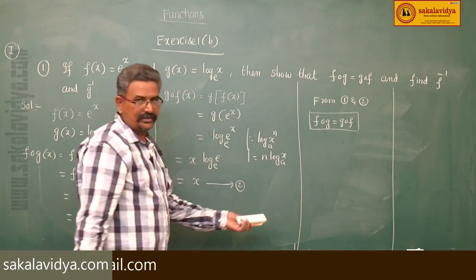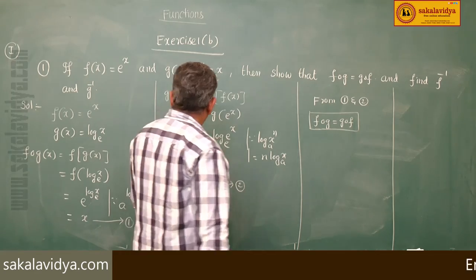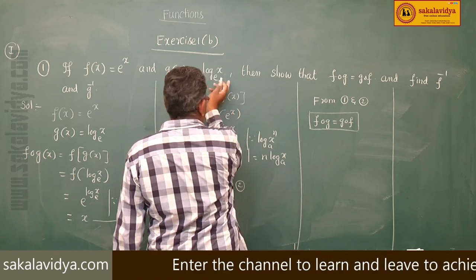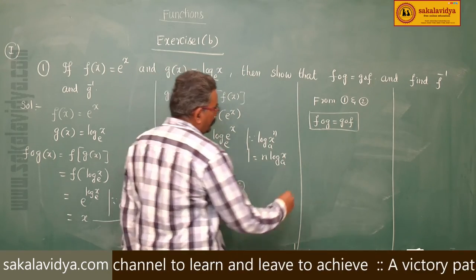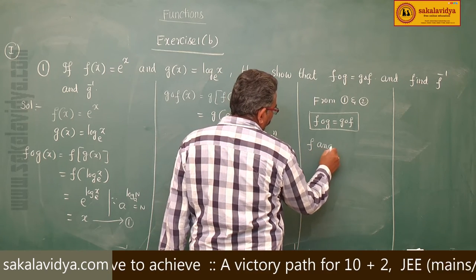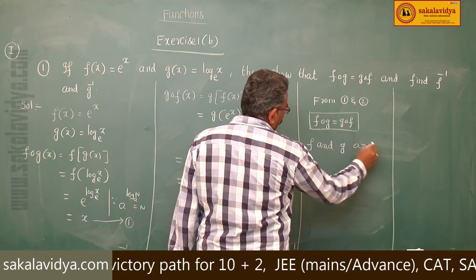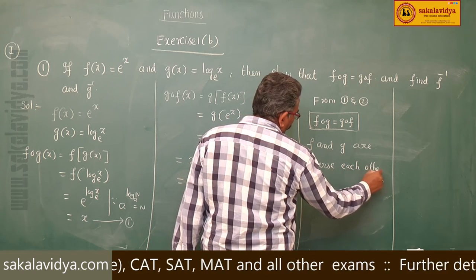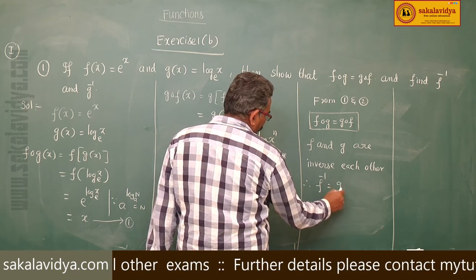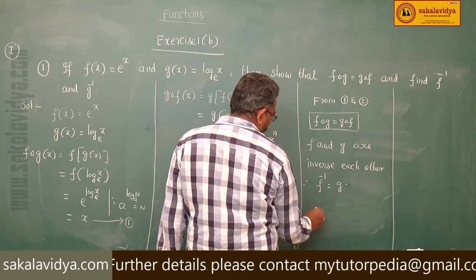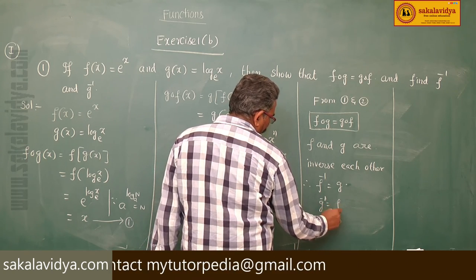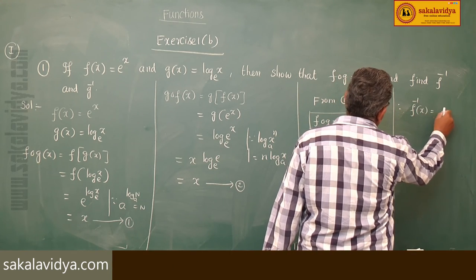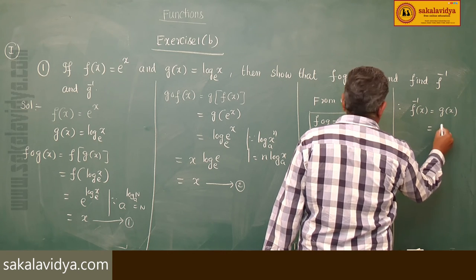Now we have to find f inverse and g inverse. Since f∘g = g∘f and the compositions yield the identity, f and g are inverses of each other. Therefore f⁻¹ = g, that is f⁻¹(x) = log x to base e, and g⁻¹ = f, that is g⁻¹(x) = eˣ.